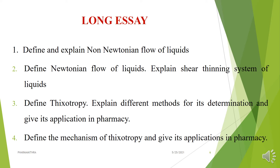Under pseudoplastic flow, write what type of behavior is observed, give examples, and explain what happens to polymers when stress is applied — they align along the long axis and water is released. The relevant equation is: F^n = η'·G. For dilatant flow, also known as shear thickening, viscosity increases with shear rate. The best examples are suspensions with high concentration of solids and starch in water. Elaborate each under three separate subheadings.